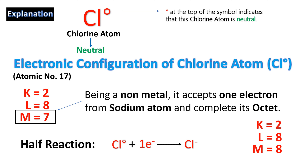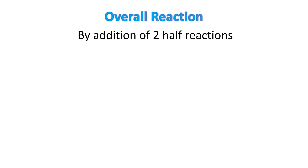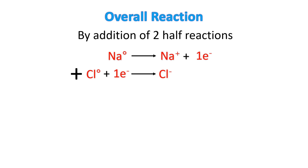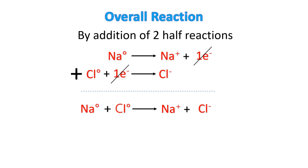After gaining the electron, the electronic configuration of chlorine becomes K shell: 2, L shell: 8, M shell: 8 — its M shell is also complete with 8 electrons, so it is now stable. It is called the chloride ion. For the overall reaction, by adding the two half-reactions — sodium atom becomes sodium ion by losing one electron, and chlorine atom becomes chloride ion by gaining one electron — we cancel the electrons on both sides, giving: Na + Cl → Na⁺ + Cl⁻, or combined as sodium chloride (NaCl).